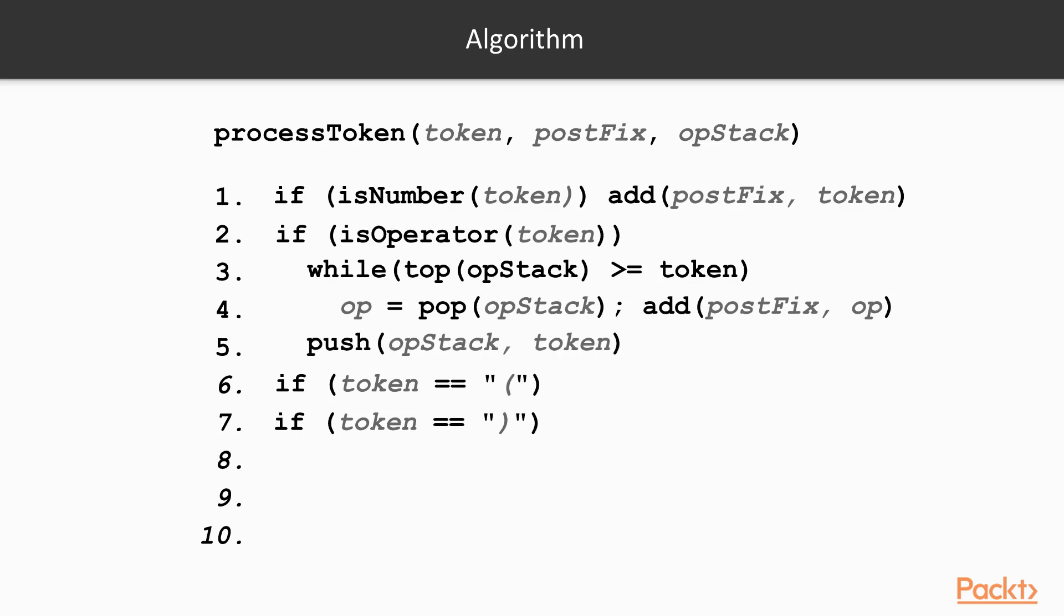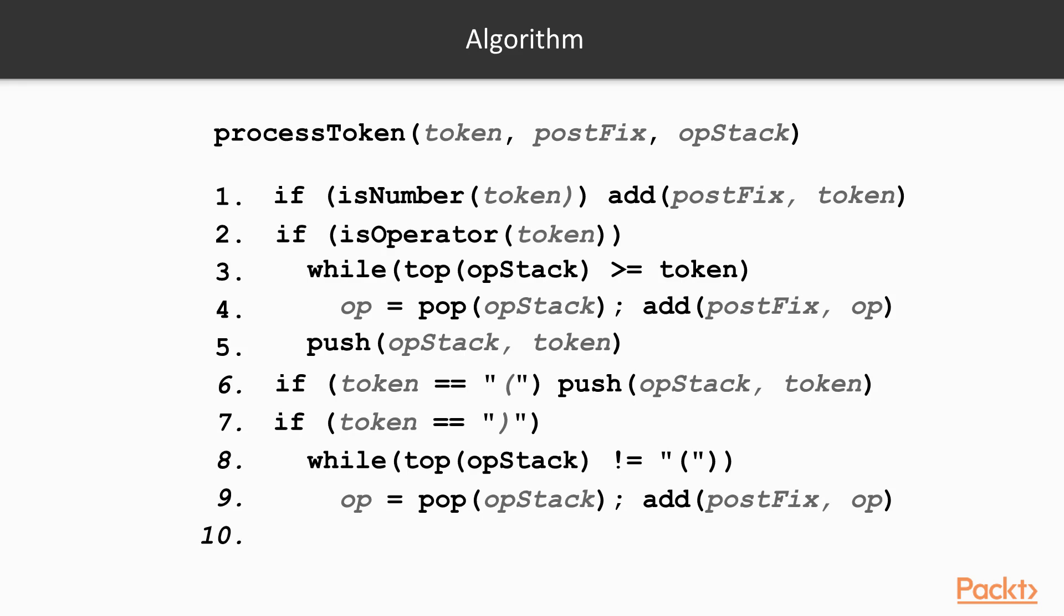The next condition is if we have a left bracket. In this case, we simply push it onto the stack. The final condition is for when we have a right bracket. In this case, we start a loop that continues while the top of the stack does not contain a left bracket. In the loop, we keep on popping our stack and placing the operators on the postfix list. Once we're done, we just need to remove the left bracket. This is done by simply popping the stack one more time.